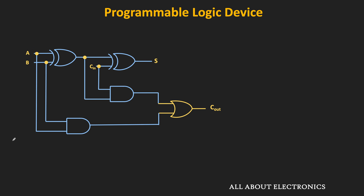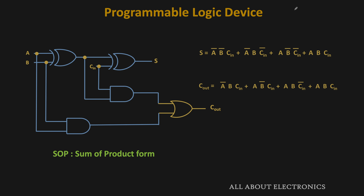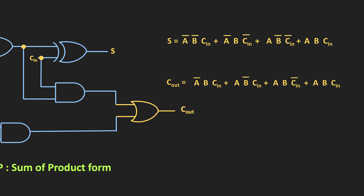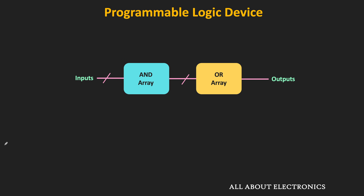The output of any conventional logic circuit can be expressed in the sum-of-products form. For example, the given logic circuit is the full adder circuit. The sum output can be given by this expression, and the carry output can be given by this expression. In the sum output, each term is the product of individual variables, which can be obtained with AND gates. The plus sign represents the sum of these product terms, which can be performed with OR gates. With the help of AND and OR gate arrays, it is possible to represent any logic circuit output in sum-of-products form.